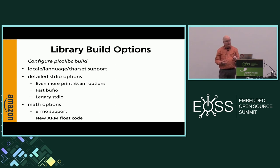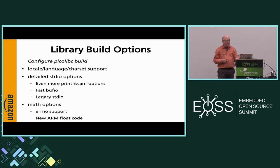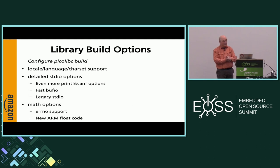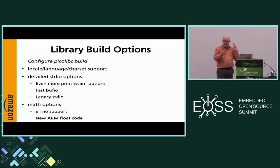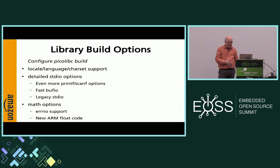There are many more build-time options. A big area is locale, language, and character set support. Picolibc inherited a lot of non-Unicode character set support from newlib — it supports GIS encodings, Microsoft code pages, ISO 8859 encodings. I'm not sure if anyone actually uses those code page translation functions — they don't cause a lot of bloat in typical applications, so I haven't removed them yet.